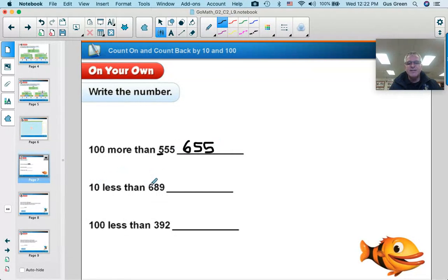So 100 more than 555 is 655. 10 less than 689. So I'm going to change the tens digit down 1. So 1 less than 8 is 7. So the 6 in the hundreds digit will stay the same. The tens digit will go down 1. And the ones digit will stay the same.